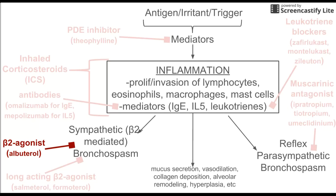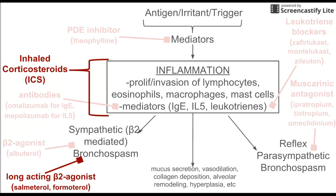Beta-2 agonists like albuterol cannot really be used long term — they lose their effectiveness over time as the body reduces the number of receptors for these drugs. So for a long-term medication to treat asthma chronically, we use long-acting beta-2 agonists like salmeterol and formoterol combined with corticosteroids. Inhaled corticosteroids increase the prevalence of the beta-2 adrenergic receptors.